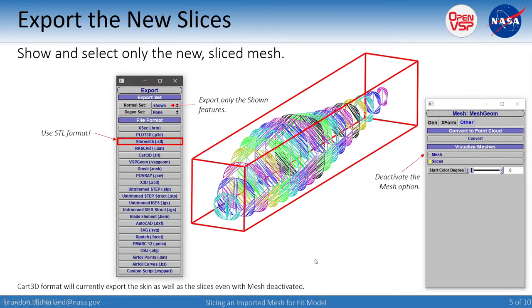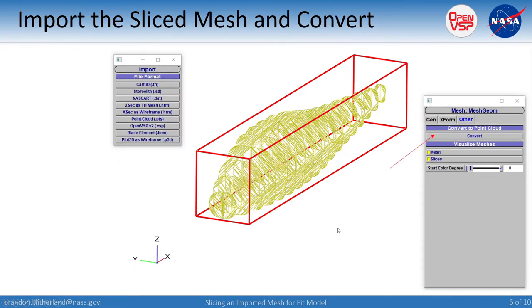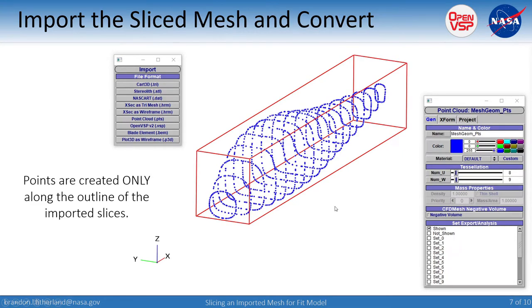We only want these slices for our targets, so we deactivate the mesh radio button and export shown only. Something I discovered this morning: you apparently have to use the STL format. I did try it with Cart3D and it exported the skin as well as the slices every time — maybe it's a feature, maybe it's a bug — but STL does work. You export the STL, save it as whatever you want, then import that mesh back in and convert it to a point cloud.